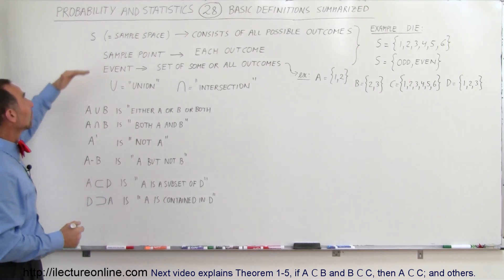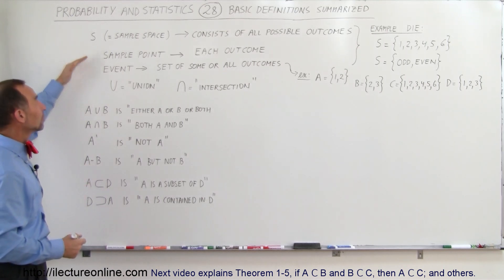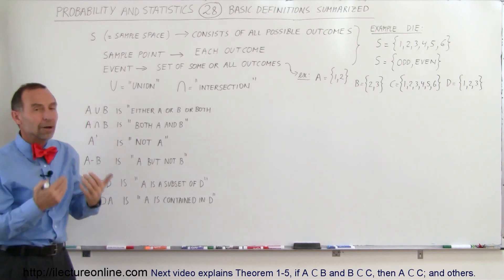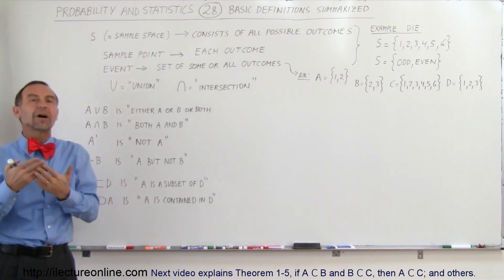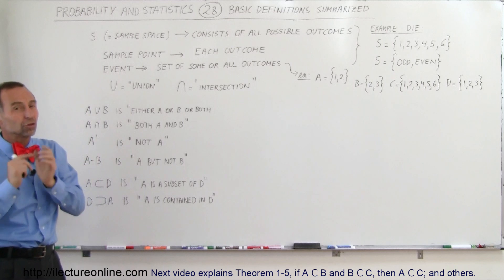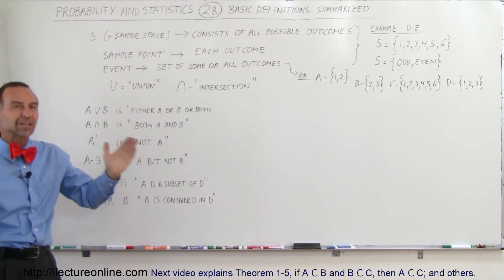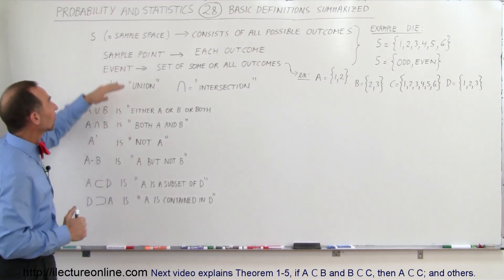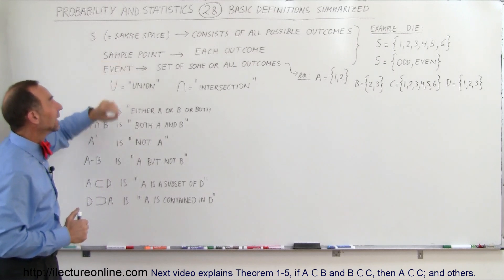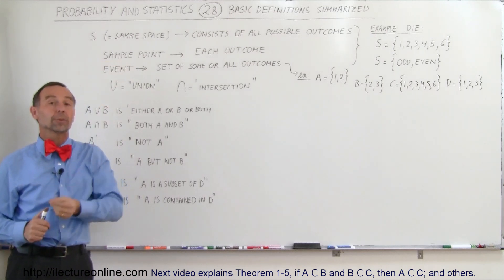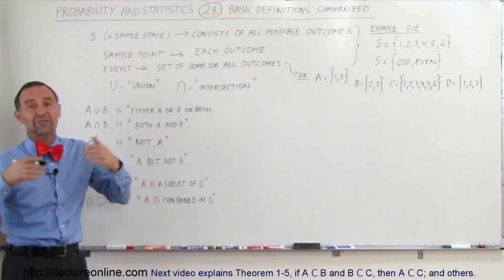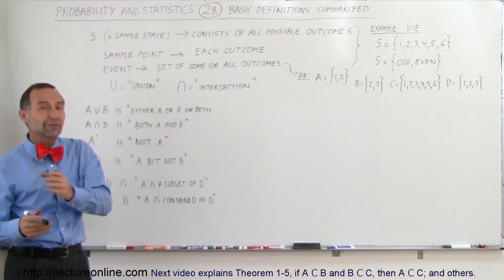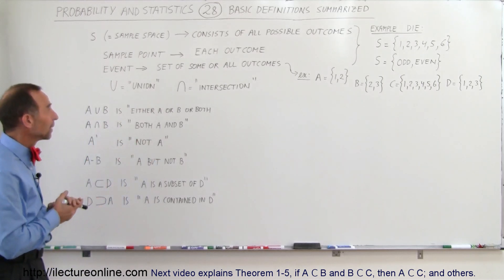First of all, the concept of a sample space. A sample space consists of all the possible outcomes — not just a number, but all the possible outcomes are contained in what we call the sample space. A sample point is any one of those possible outcomes. So if the sample space has five possible outcomes, you have five different outcomes.